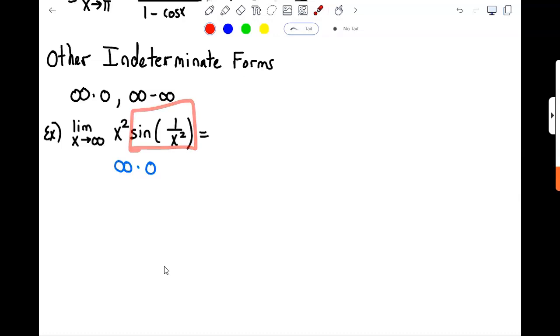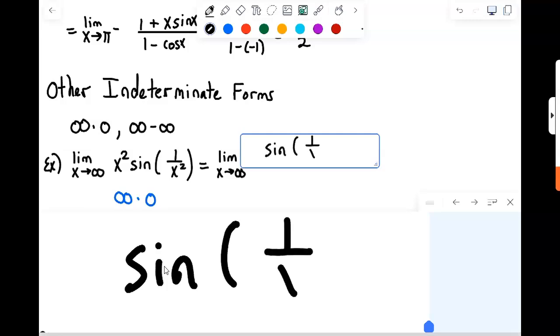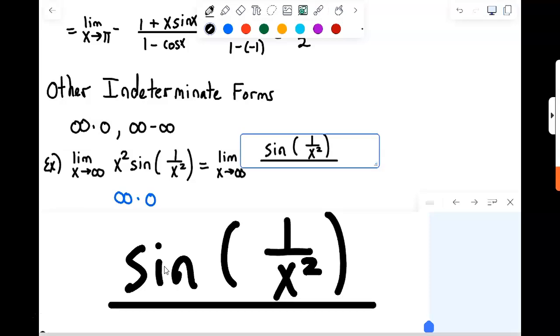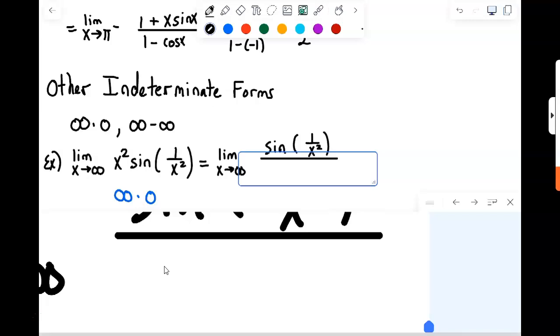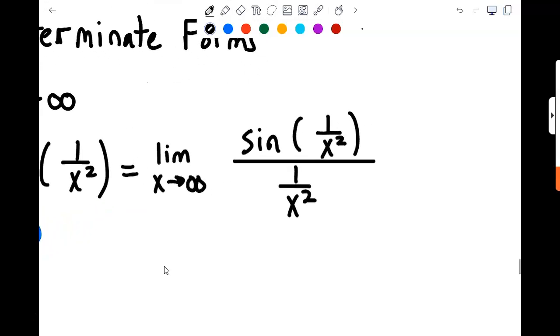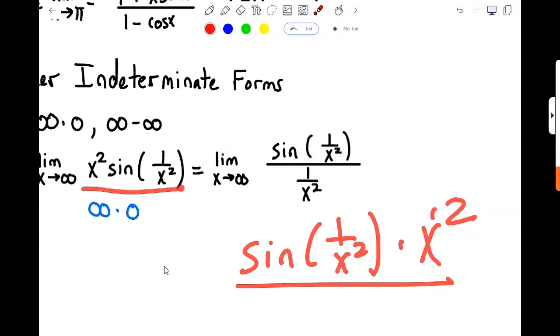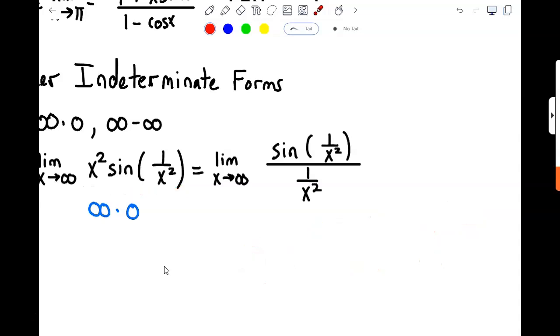So, I can take either piece, the x squared or the sine of one over x squared, and put that up on top. Life is far simpler if I put the sine up on top, so sine of one over x squared up top, and say that's the same as that over the reciprocal of x squared. Notice, of course, if you simplified something, sine divided by that, you would say it's sine of one over x squared times the reciprocal of one over x squared, which would just be x squared, and that would take me back right to where I started. So that's the idea.